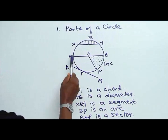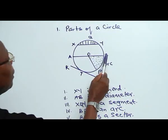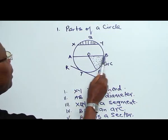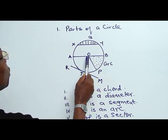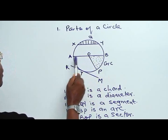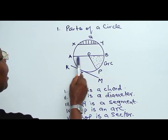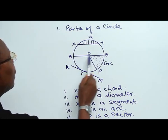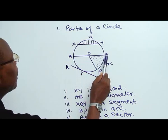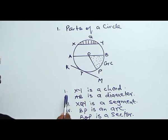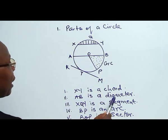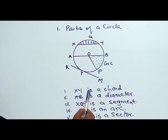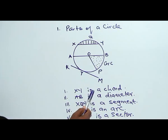Next is AB. The line AB is passing through the center of the circle. Therefore we say that the line AB is a special chord called the diameter. AB is a diameter. It is a special chord because it passes through the center of the circle.